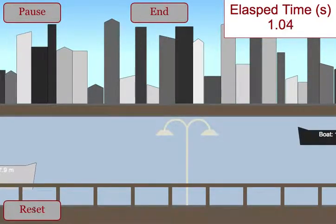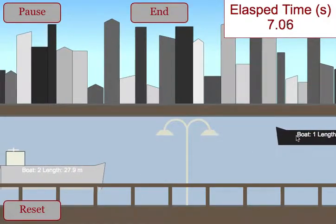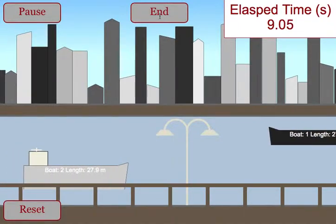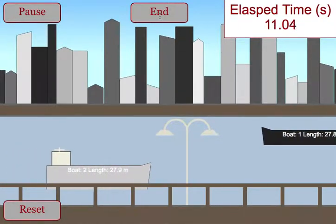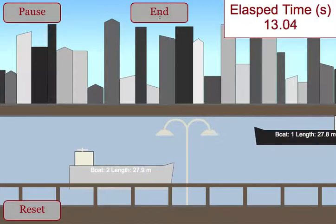Once the students have the speed of each boat, if they'd like, they can watch it again just so they can see how the boats are moving relative to each other. They then use the speeds that they calculated to find the relative speed of the boats.